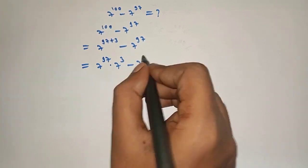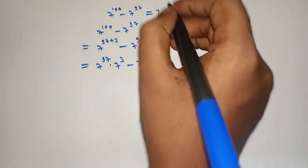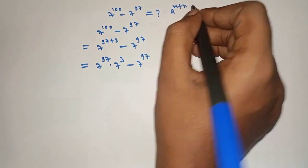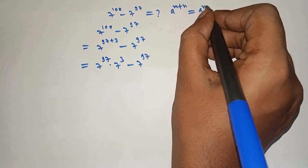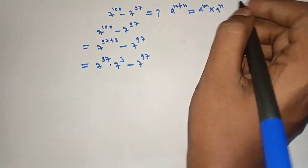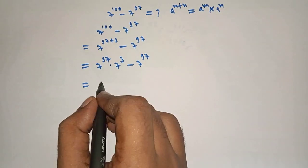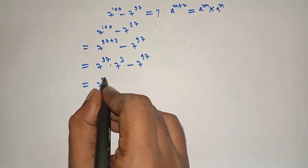Because when A raised to M plus N it can be written as A raised to M into A raised to N, which is equal to here we will take 7 raised to 97 as common.